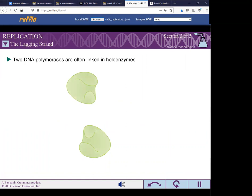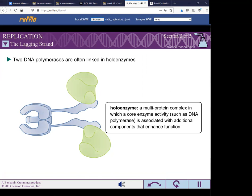In bacteria, the two DNA polymerases responsible for replicating the leading and lagging strands are linked together in multi-protein complexes called holoenzymes. How do two DNA polymerases remain linked and yet synthesize DNA on both the leading and lagging strands?